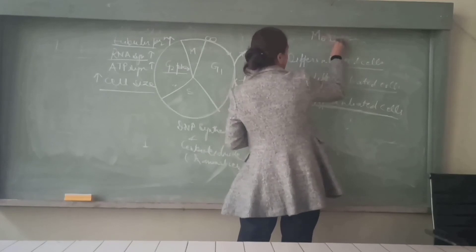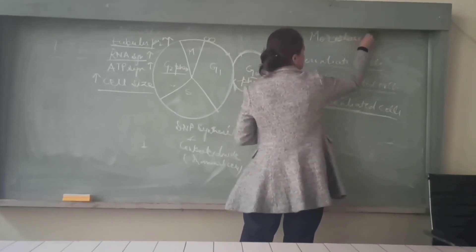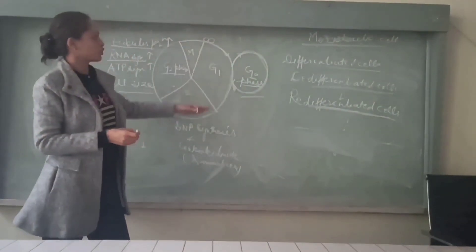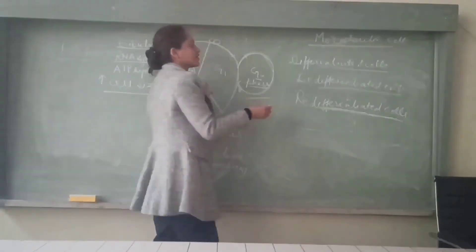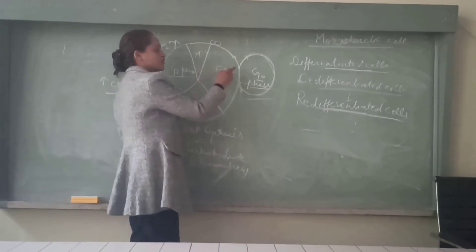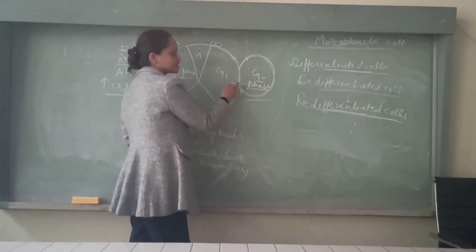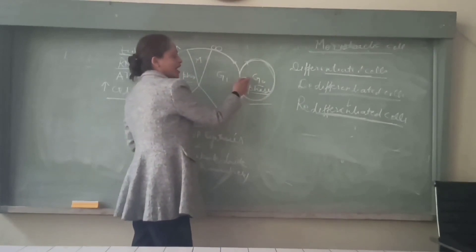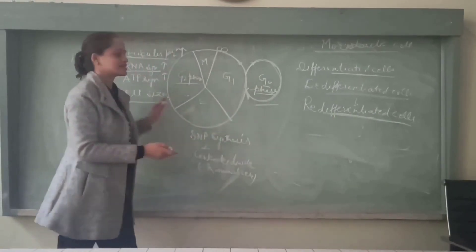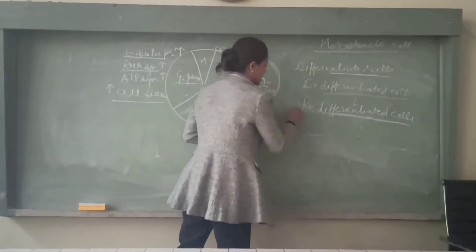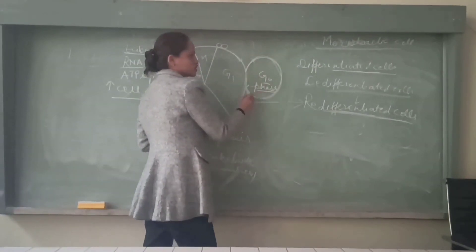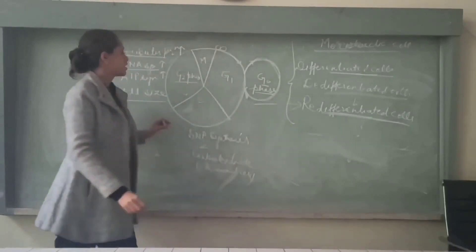So there are four kinds of cells: meristematic cells, which continuously follow the cell division cycle; differentiated cells, which are specialized for function and enter the G0 phase; dedifferentiated cells, which come out of G0 phase back into G1 and follow the cell cycle; and re-differentiated cells, which further get differentiated and re-enter G0.